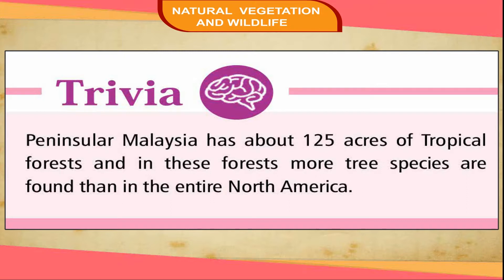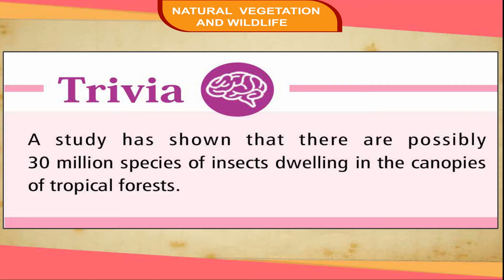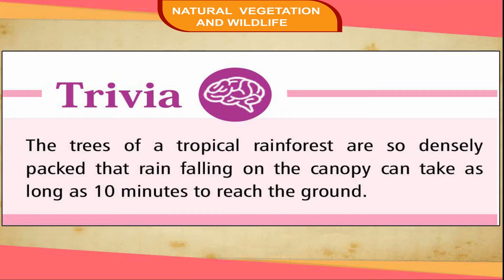Trivia. Peninsular Malaysia has about 125 acres of tropical forests, and in these forests more tree species are found than in the entire North America. A study has shown that there are possibly 30 million species of insects dwelling in the canopies of tropical forests. The trees of a tropical rainforest are so densely packed that rain falling on the canopy can take as long as 10 minutes to reach the ground.